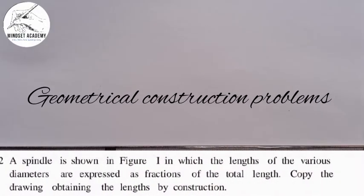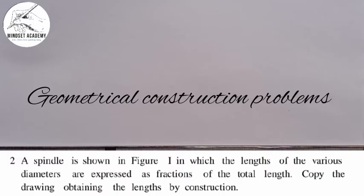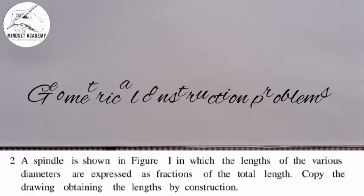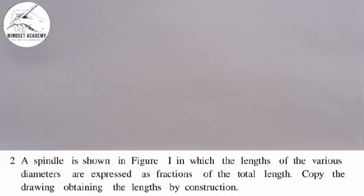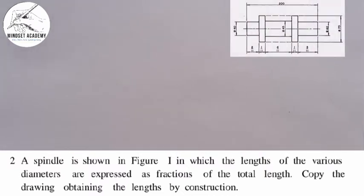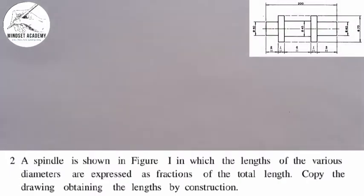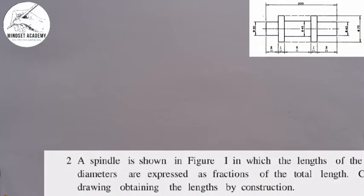Welcome to this channel where we analyze a question on geometric construction. The question shows a spindle in the figure, in which the length of various diameters are expressed as fractions of the total length. We are told to copy the drawing and obtain the lengths by construction.